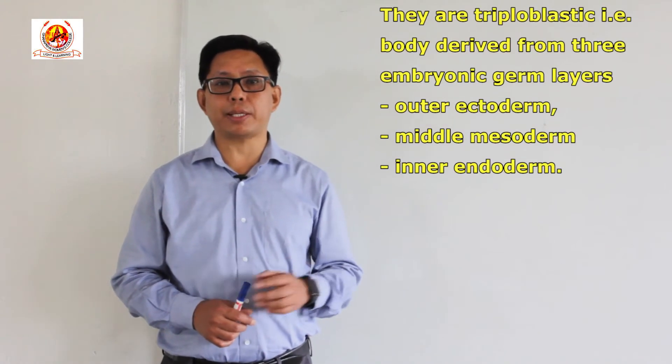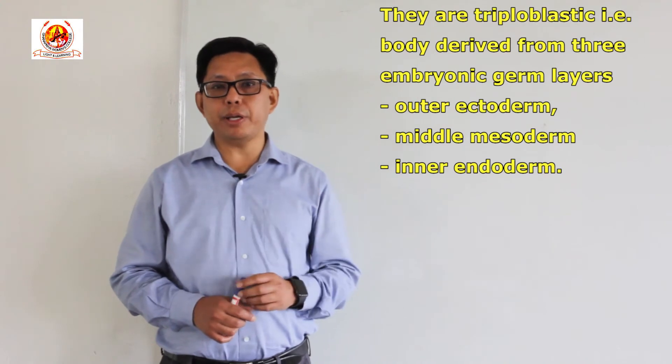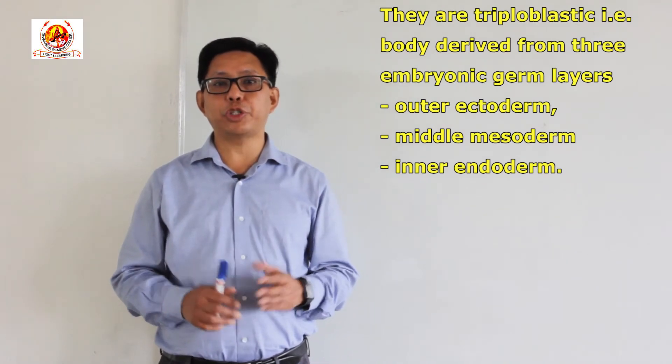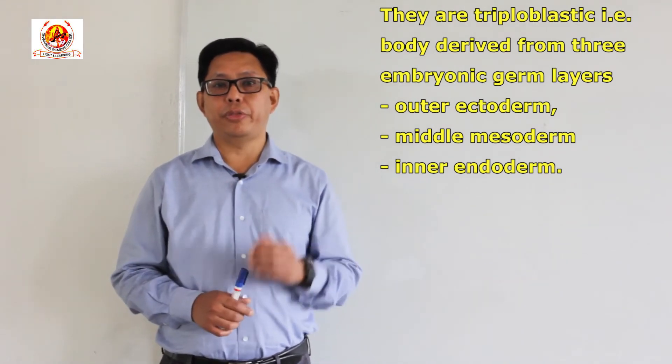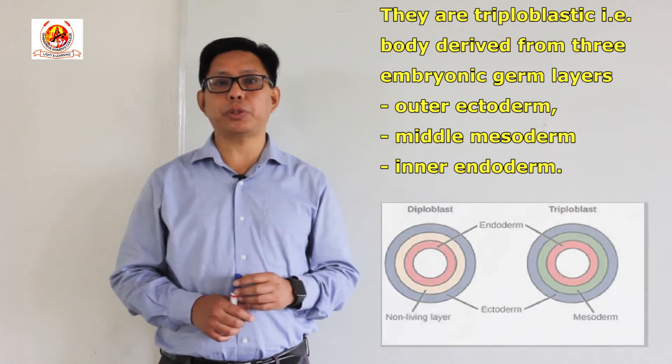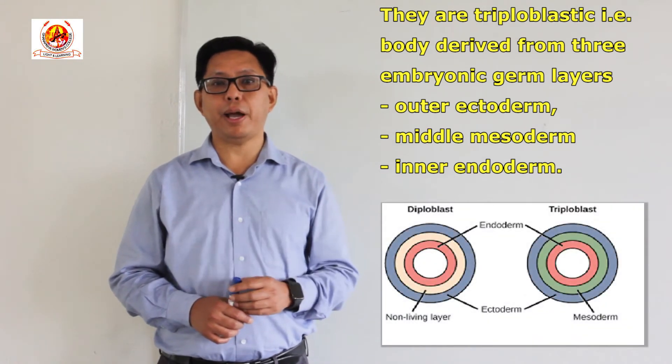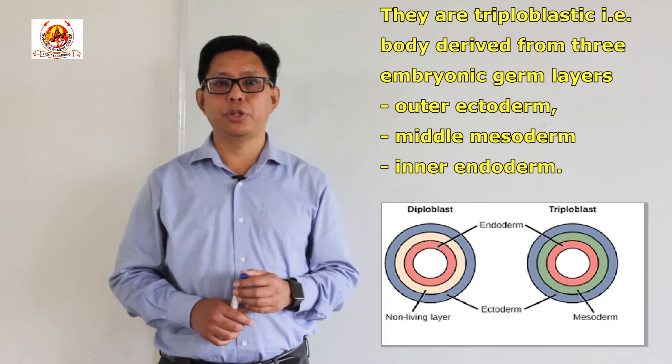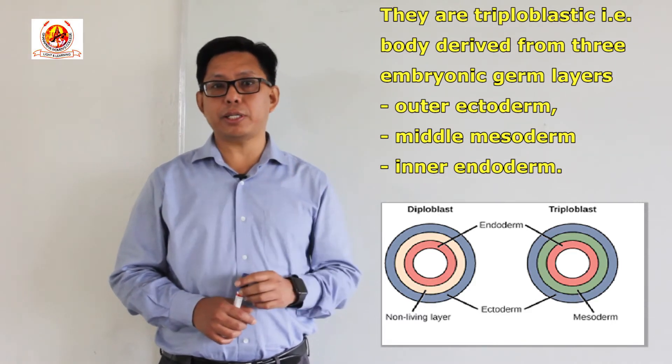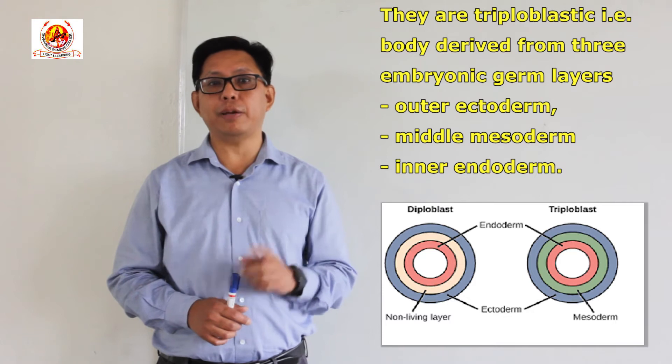The next important character is that they are triploblastic. Triploblastic means they have three germ layers: the outer ectoderm, middle mesoderm, and inner endoderm. They are the first organisms to have triploblastic level of organization. Porifera, Coelenterates, and Ctenophores had only diploblastic level of organization.